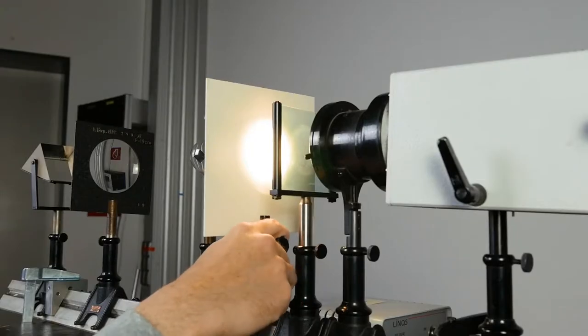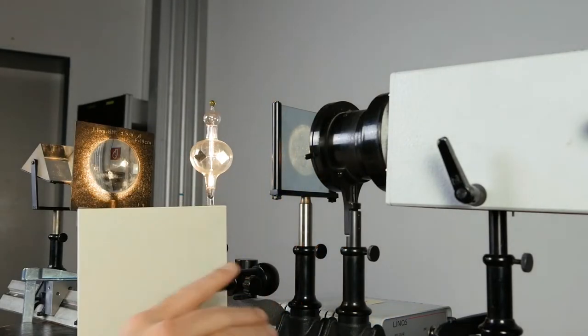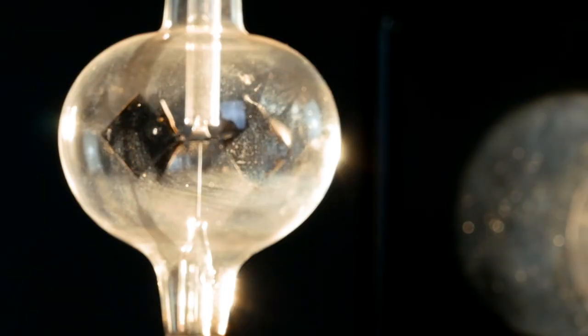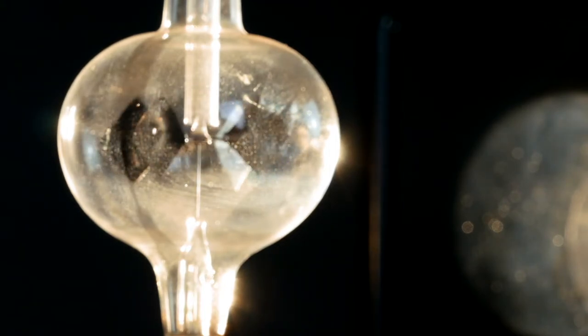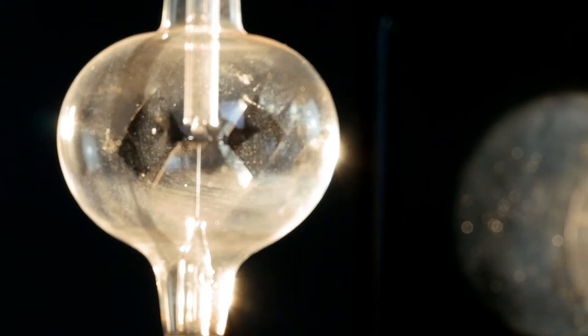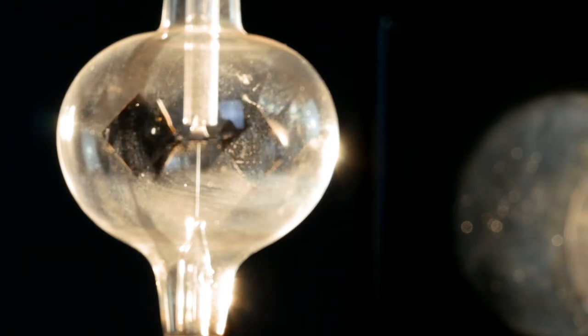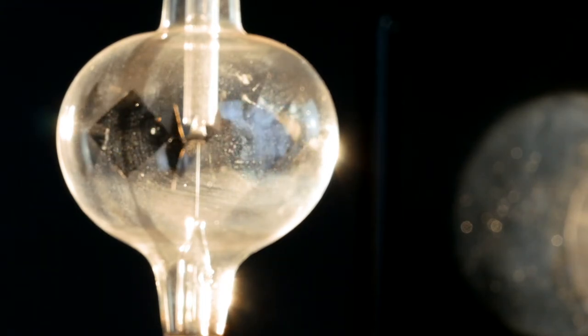If you now point a lamp at the lightmill, the wheels start turning. You can observe that the lightmill turns in the direction of the silver side. The silver side thus shows in the direction of the movement. The black side shows against the direction of movement.